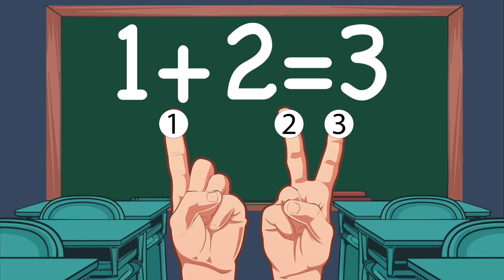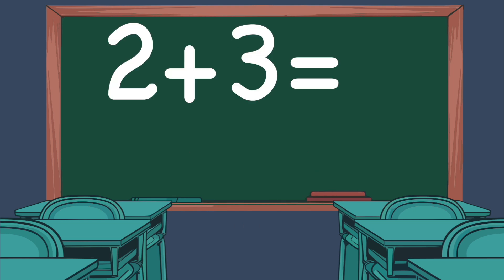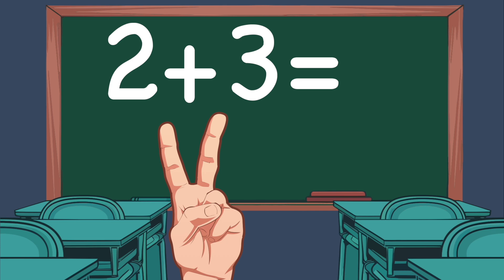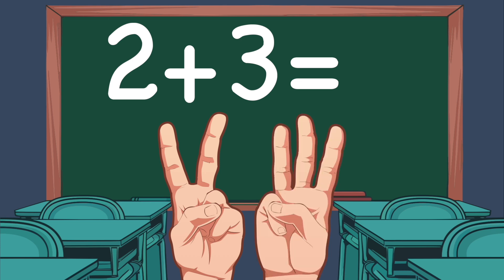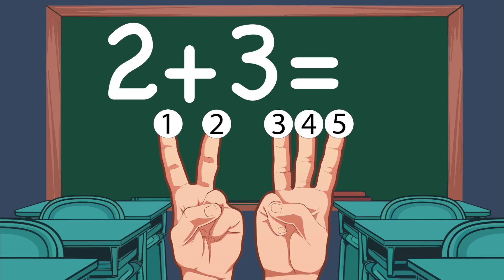Let's do another one: 2 plus 3. On our left hand, we show 2 fingers. On our right hand, we show 3 fingers. Let's count the total number of fingers: 1, 2, 3, 4, 5. So 2 plus 3 equals 5.